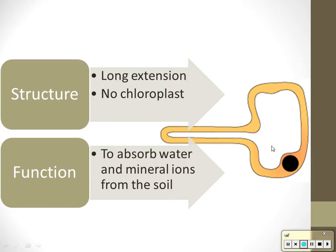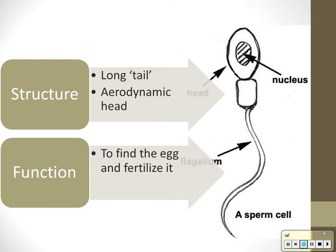Another cell that maximizes surface area is root hair cells. Root hair cells have a long extension to increase the surface area of the cell, because their job is to absorb water and anything dissolved in it — specifically mineral ions — from the soil. Please note root hair cells have no chloroplasts. They are white because underground there will not be a lot of photosynthesis taking place — there's no sunlight.